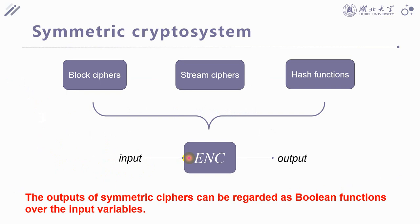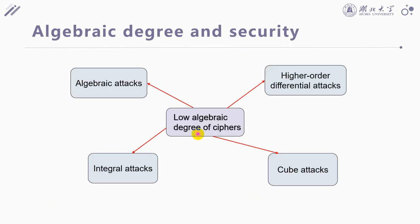The output of symmetric ciphers can be regarded as a Boolean function over the input variables. So, if a cipher exhibits no algebraic degree, distinguishing attacks or cubic recovery attacks can be achieved, such as integral attacks, cube attacks, higher-order differential attacks, and some algebraic attacks. So, it is very important to estimate a tight bound on the algebraic degree.